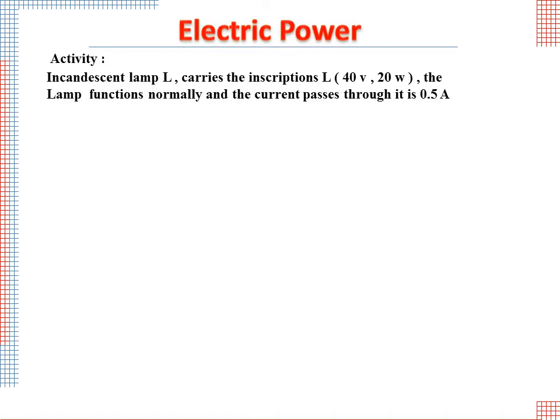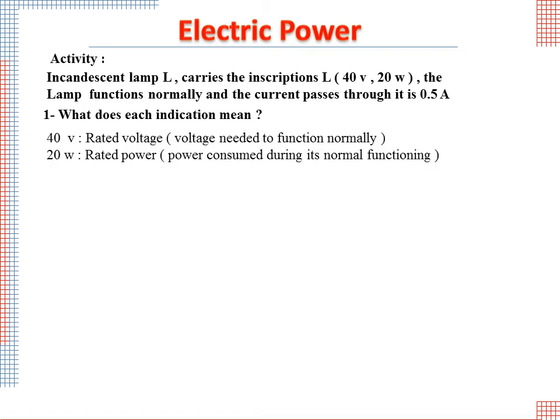Activity: Incandescent lamp L carries the inscriptions 40V and 20W. The lamp functions normally and the current passing through it is 0.5A. What does each indication mean? 40V is the rated voltage, the voltage needed to function normally. 20W is the rated power, the power consumed during its normal functioning.